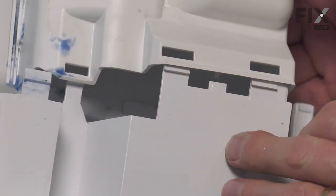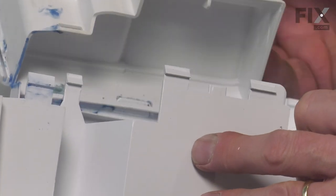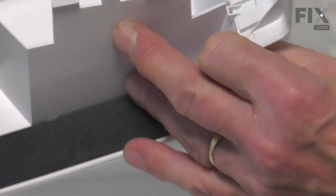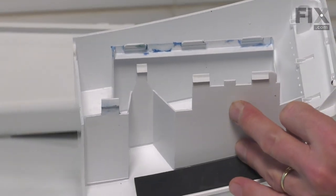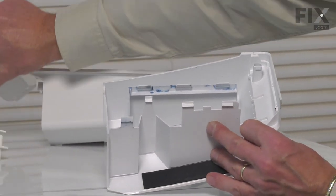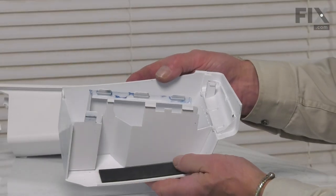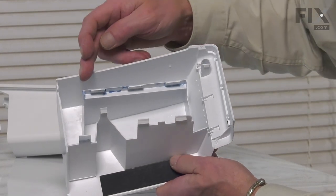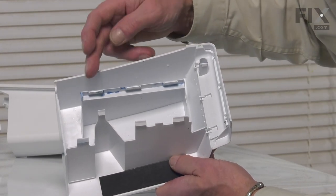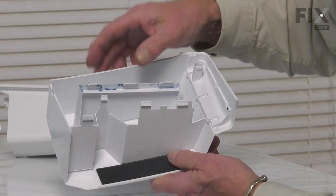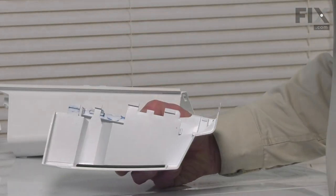Once you've released the three in the bottom, just hinge that back and lift it away from the handle. You can discard the old detergent drawer. Now, while we have this apart, we'll take this opportunity to remove any residual detergent or softener that may have accumulated on this part as well as around this opening.